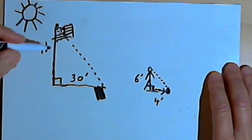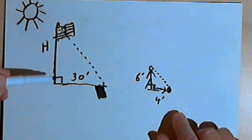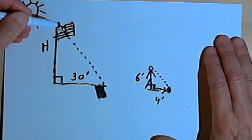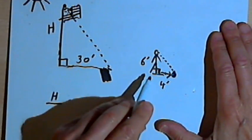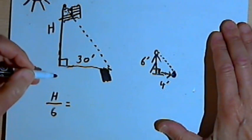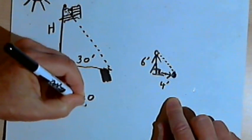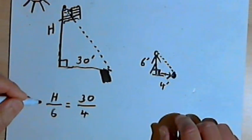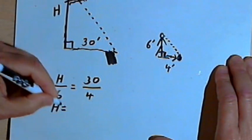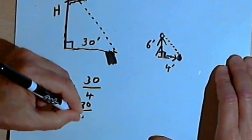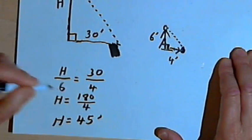I can now find the height of the flagpole. To do that, I'm going to use the fact that for similar triangles the sides are proportional. So the height of the flagpole, h, over the height of the man, which is 6, should equal the ratio of the length of the flagpole's shadow, which is 30, over the length of the man's shadow, which is 4. So h over 6 equals 30 over 4. I'll multiply both sides by 6 and get h equals 6 times 30, which is 180, over 4. Dividing 180 by 4, I find that the height of the flagpole is 45 feet.